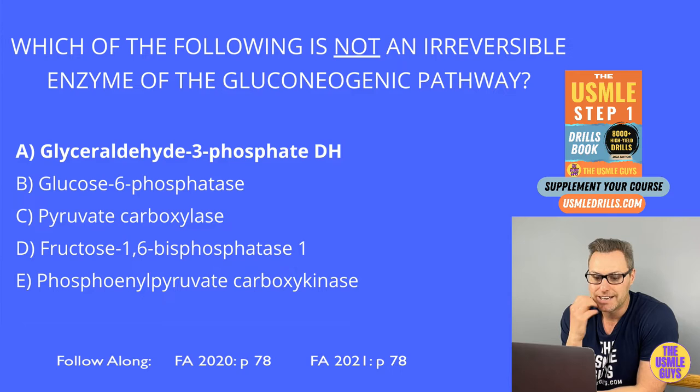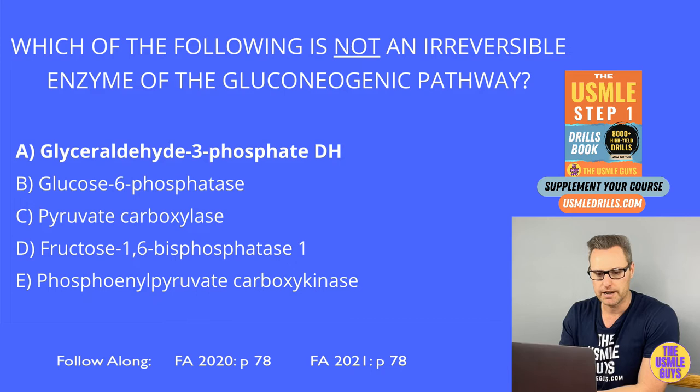Your final irreversible gluconeogenic enzyme is glucose-6-phosphatase. That converts glucose-6-phosphate into glucose.